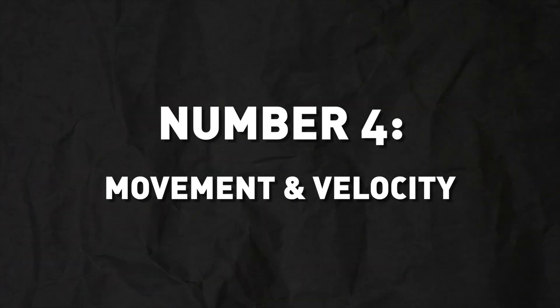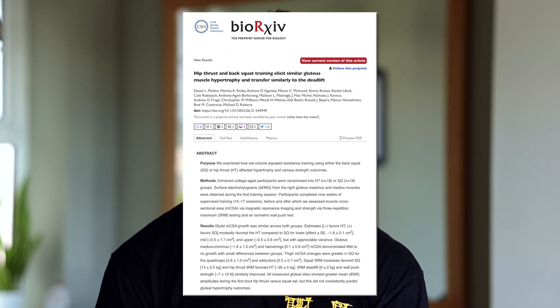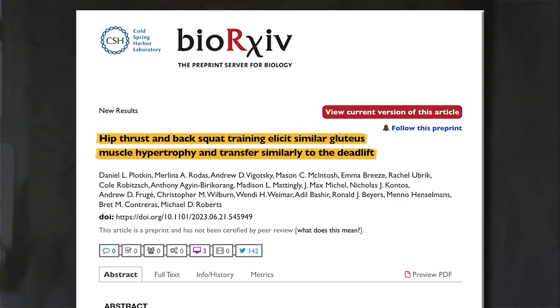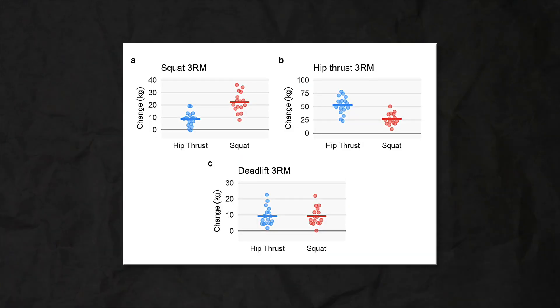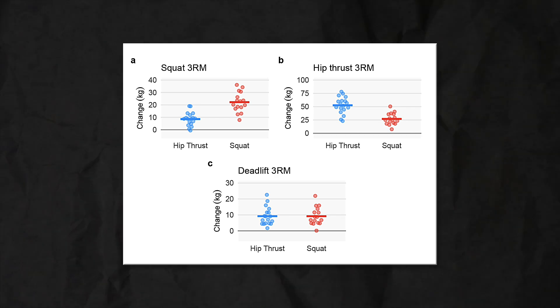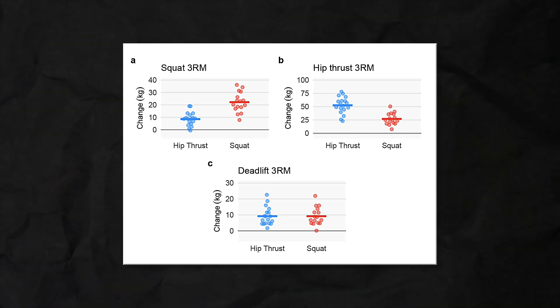One final thing: strength gains seem to be both movement and velocity specific. The idea that strength gains are movement specific was beautifully illustrated by a recent study by Plotkin and colleagues. One group did only squats; one group did only hip thrusts. They measured squat, deadlift, and hip thrust strength. The squat group gained the most squat strength, the hip thrust group gained the most hip thrust strength, and in the deadlift, gains in strength were similar between groups.